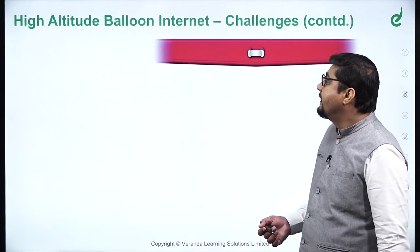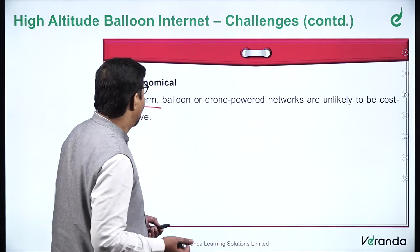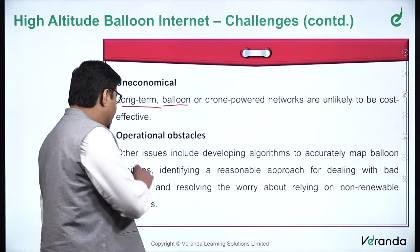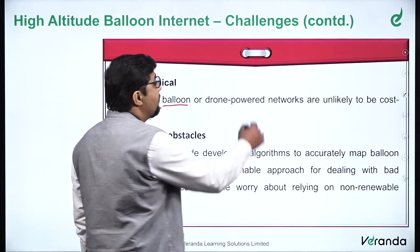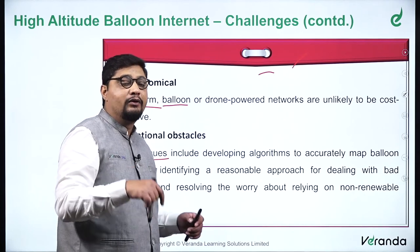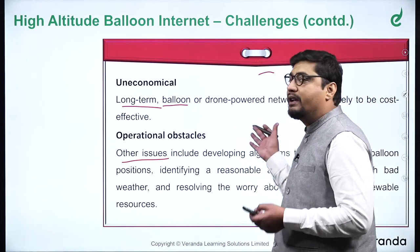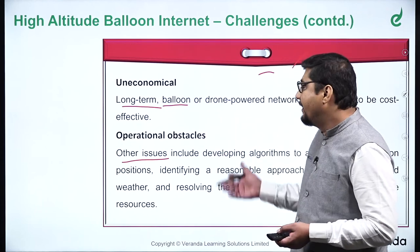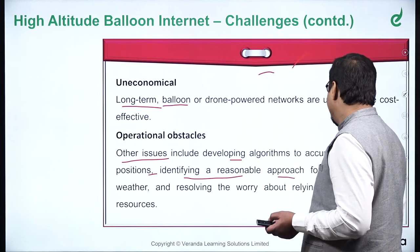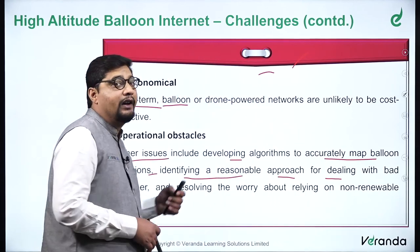The second challenge is that it is uneconomical — sending balloons involves power, energy, and consumption costs, and long-term balloon or drone-powered networks are unlikely to be cost effective. The third challenge is operational obstacles. These include developing algorithms to accurately map balloon positions, identifying a reasonable approach for dealing with bad weather, and resolving concerns about relying on non-renewable resources. Just as a customer care team locates a tower to fix internet issues, the same must be done for these balloons in the sky, which is a real operational difficulty.